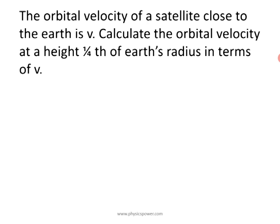Now go to the next problem. The orbital velocity of a satellite very close to the earth is V — they gave a symbol instead of a value. Calculate the orbital velocity at a height of (1/4)th of the earth's radius in terms of V. So the height H = R/4.